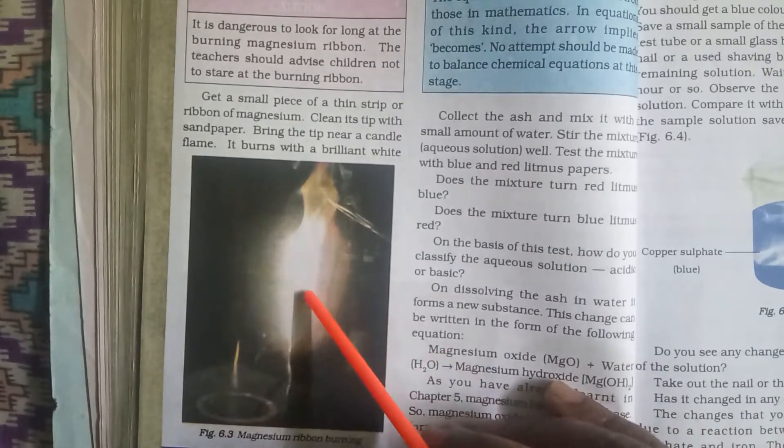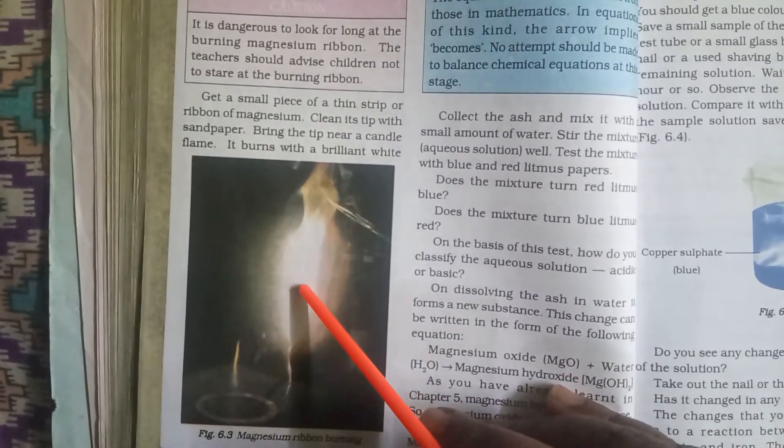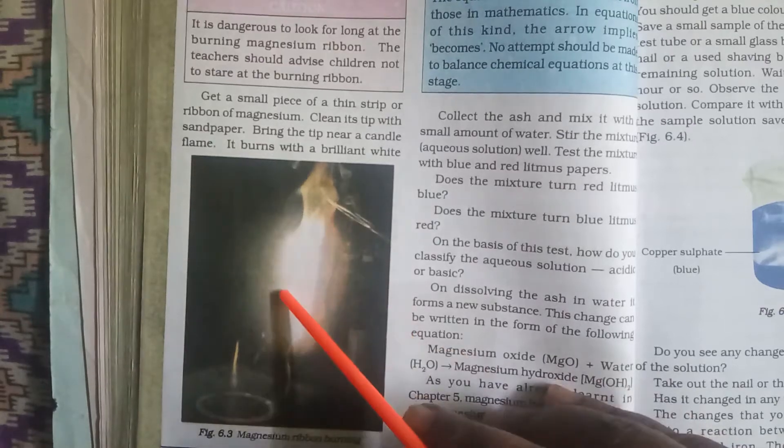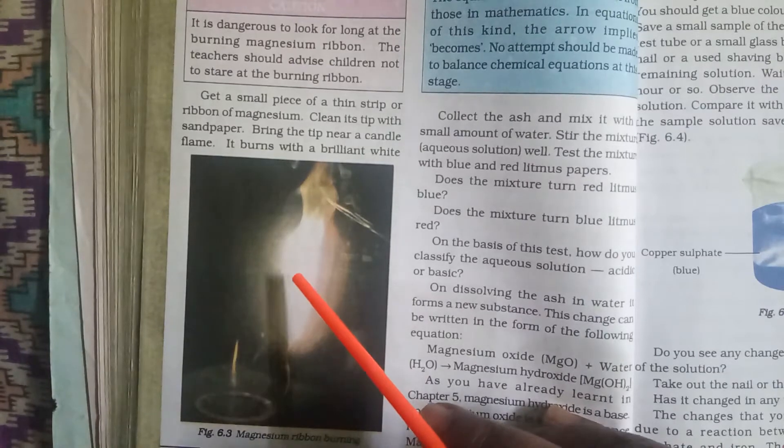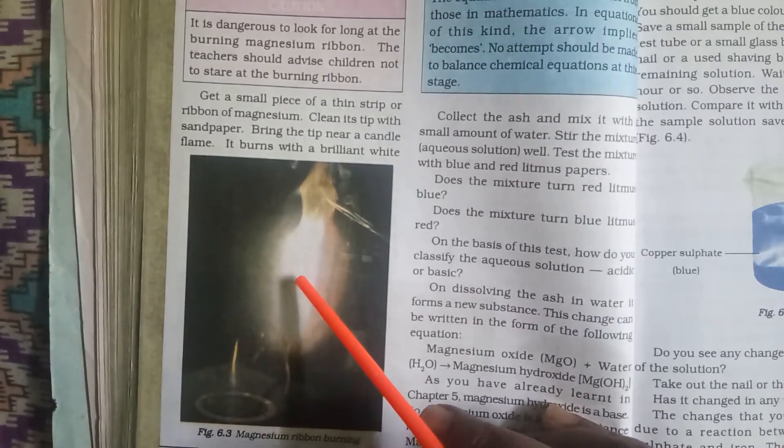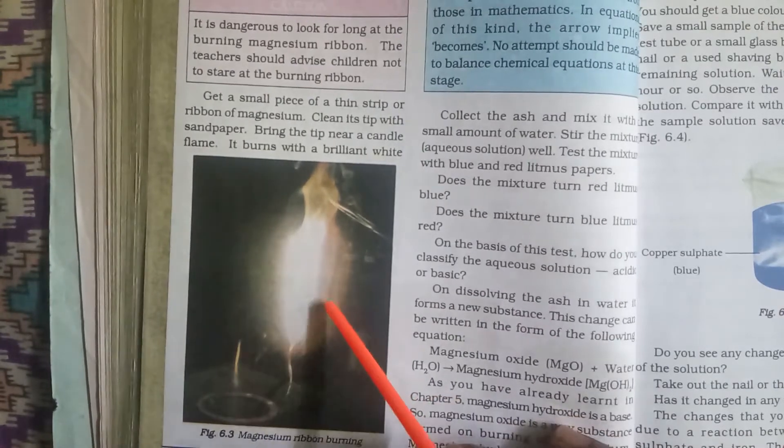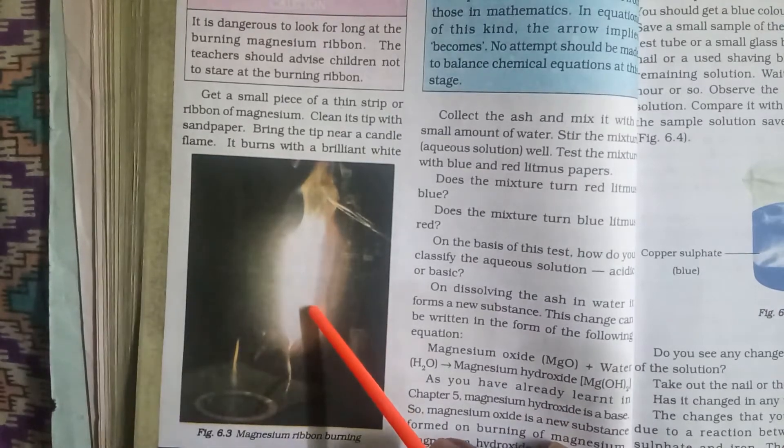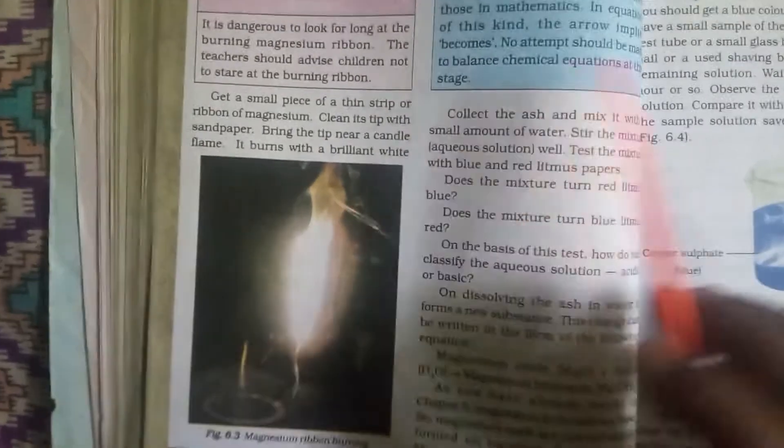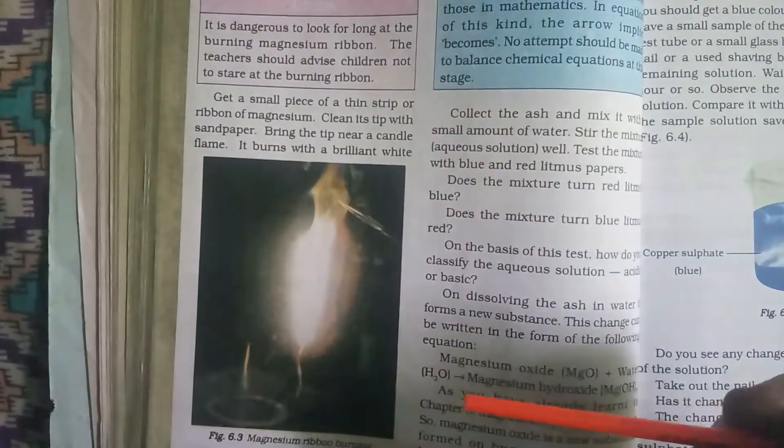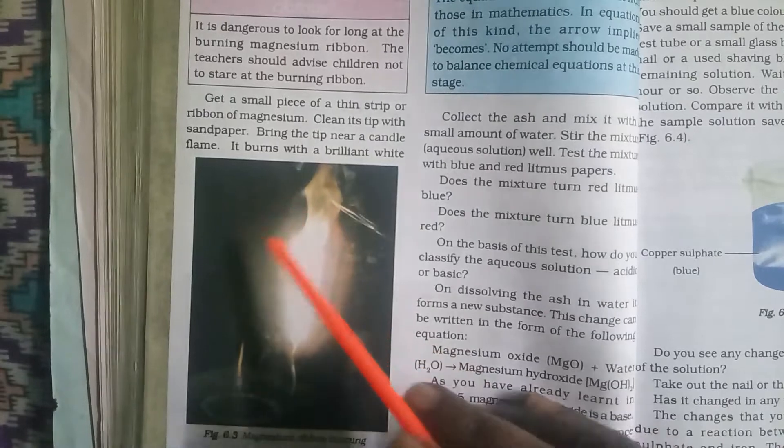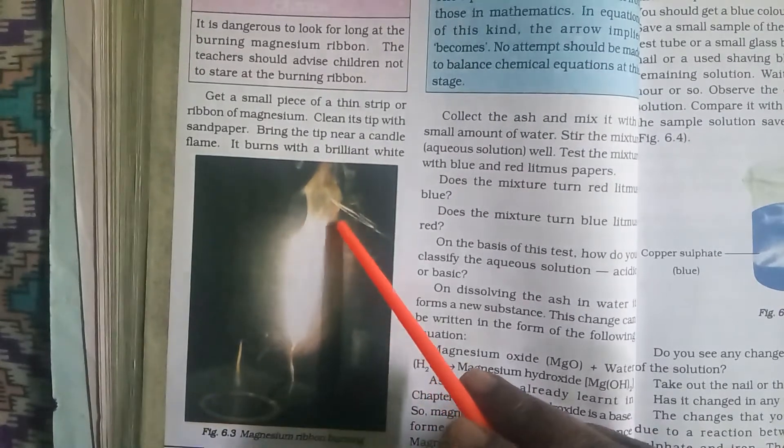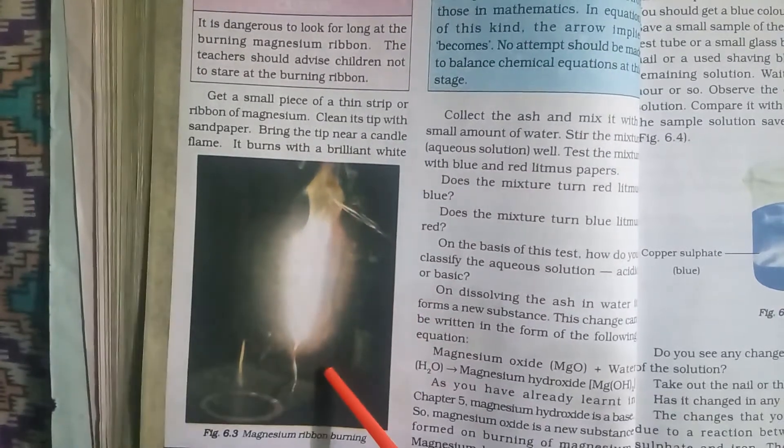Later on we have to take this magnesium ribbon near the candle, near the flame. It starts burning with a very brilliant white flame as you can see in the picture. When it completely burns it leaves ashes, that means powder. As it is burning, powder structures will fall down.